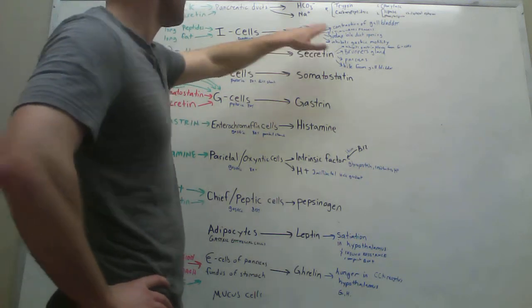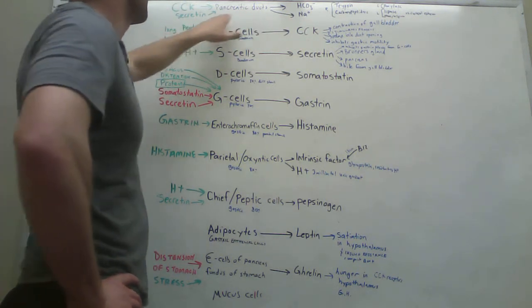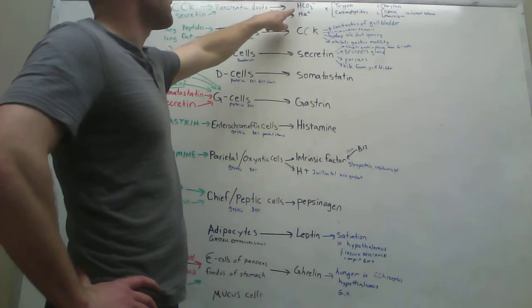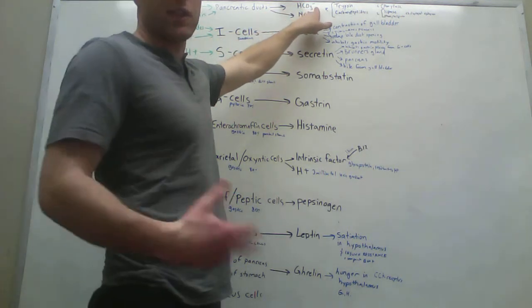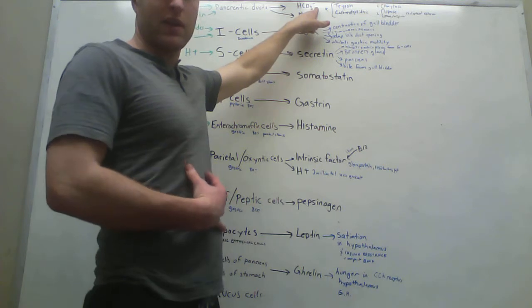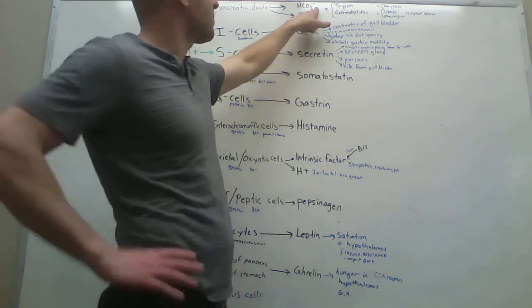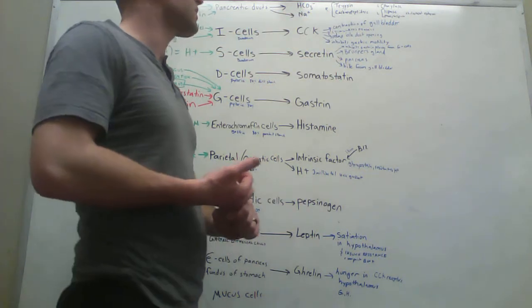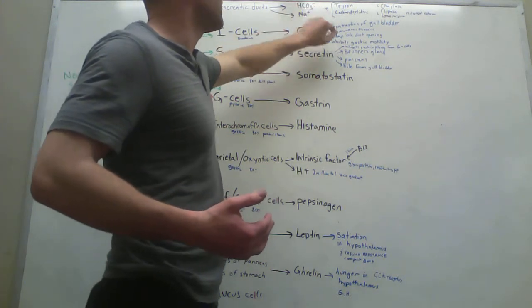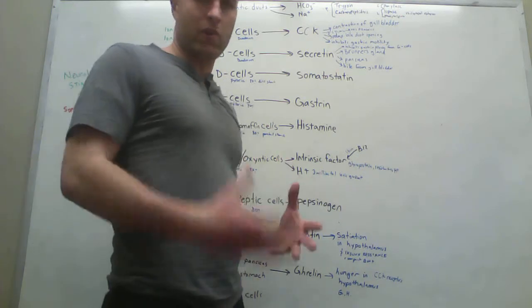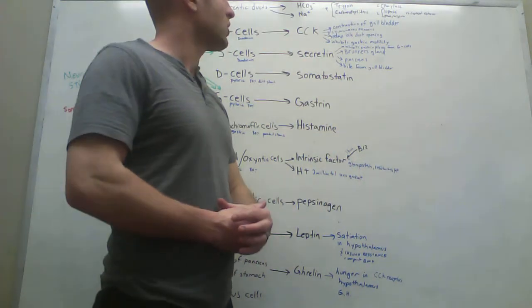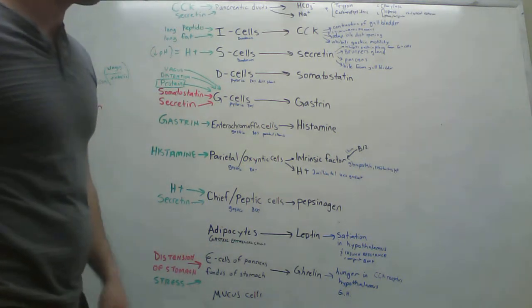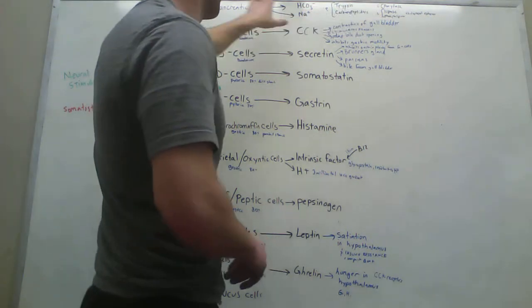The pancreas releases a lot of different things. So cholecystokinin stimulates actually the pancreatic ducts, as were mentioned. So does secretin. It stimulates the pancreatic ducts to release, I believe it's bicarbonate and sodium. Bicarbonate acts as an acidic buffer because the stomach's super acidic, but you don't necessarily want that acid going everywhere. So that makes sense, cholecystokinin stimulated in a buffer, but it also releases trypsin and carboxypeptidase, which essentially break down proteins. It also releases amylase, which breaks down carbohydrates, and it releases lipase and phospholipase and cholesterol esterase, which break down fat.